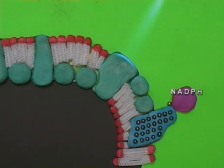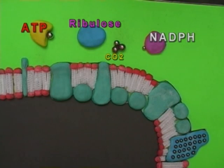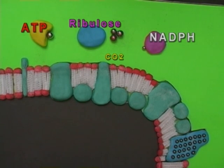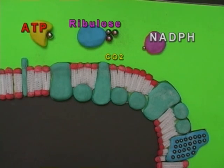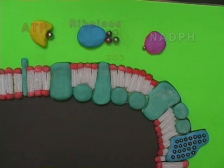Outside the thylakoid membrane, CO2 combines with a molecule of ribulose with the help of ATP and NADPH. CO2 and ribulose are turned into sugar.